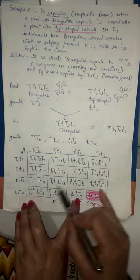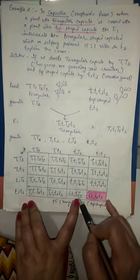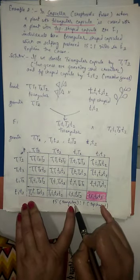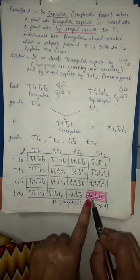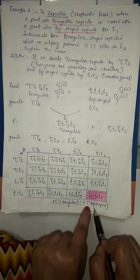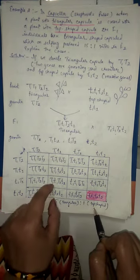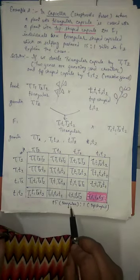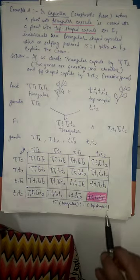All the individuals where either T1 or T2 is present singly or in doubles, if any dominant is present, they will show triangular capsule. The last one, which is having all four recessive, will produce the top shaped capsule. Hence, we can observe 15 triangular and one top shaped individuals.